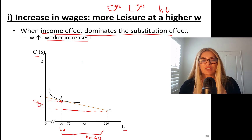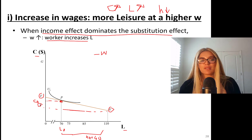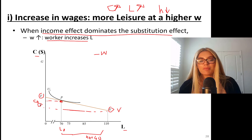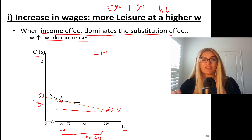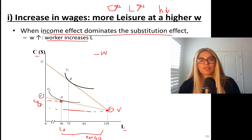So what happens when wages go up? When the wage rate goes up, my budget line is FE, and the slope of this budget line is negative W. If wages go up, this budget line will become steeper. My non-labor income didn't change, so we're going to pivot around point E. The budget line swivels up from FE to GE, getting steeper.